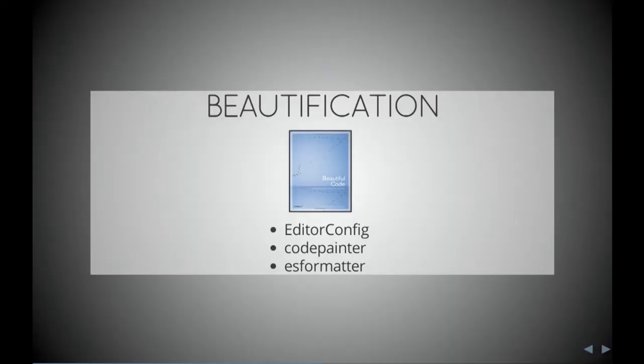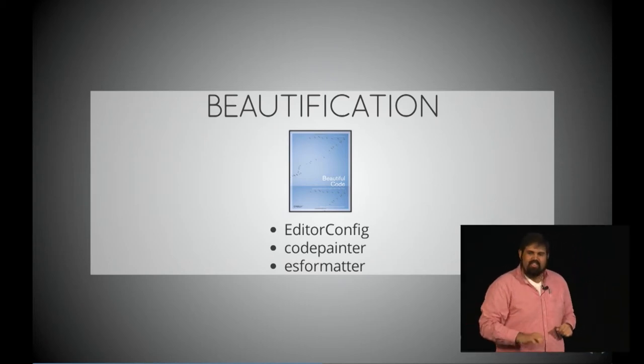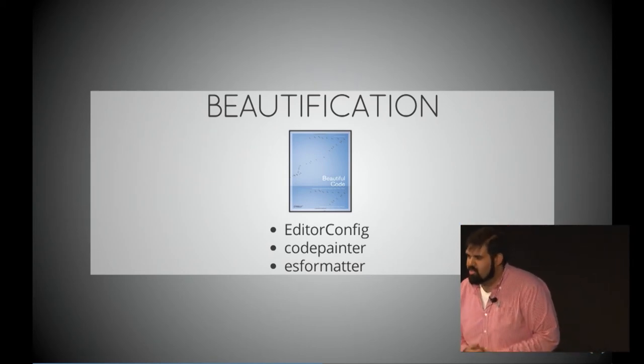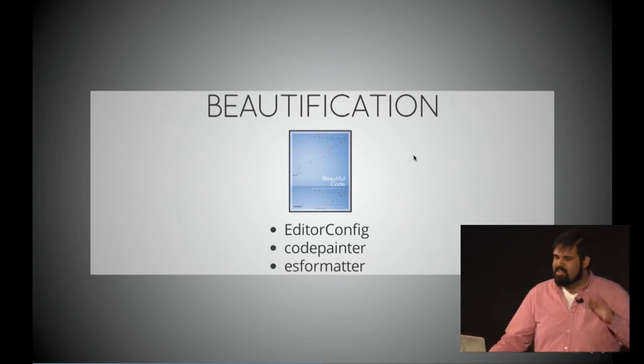Beautification converts ugly code at the top into beautiful formatted code at the bottom. If you're working on a mixed team with Vim, IntelliJ, Visual Studio, and different IDEs, you can use something like EditorConfig. If you don't have any standards yet, Code Painter is great because it can analyze your current code and say 90% of the time you use two spaces and almond-style braces, then write a config file to force all your code to conform. Additionally, for ES6 features there is ESFormatter.